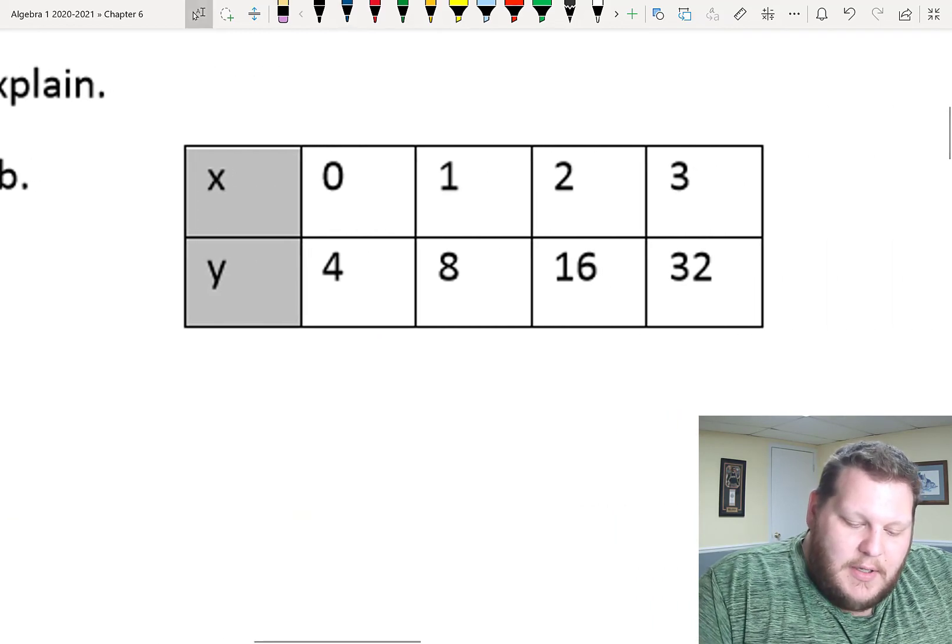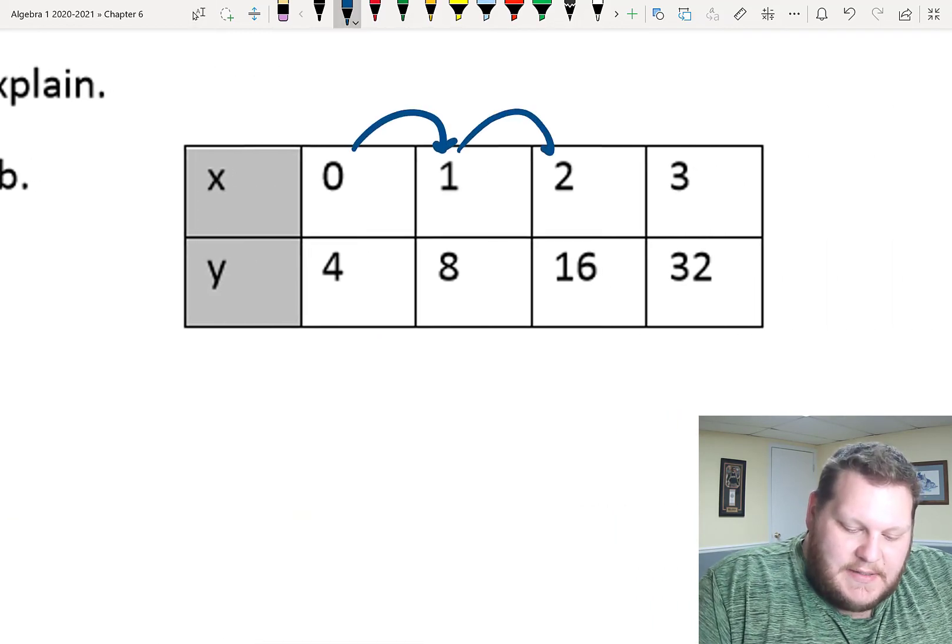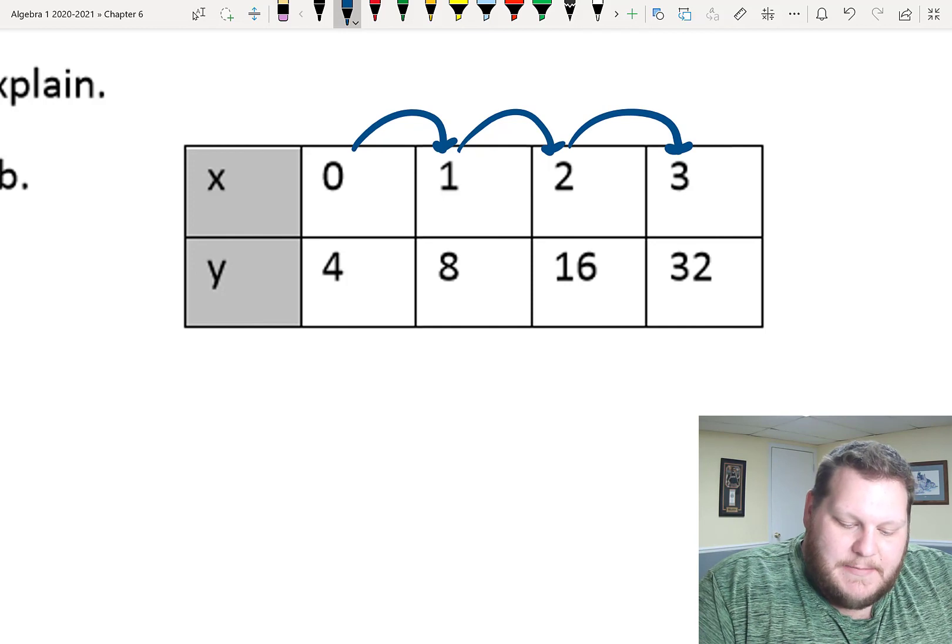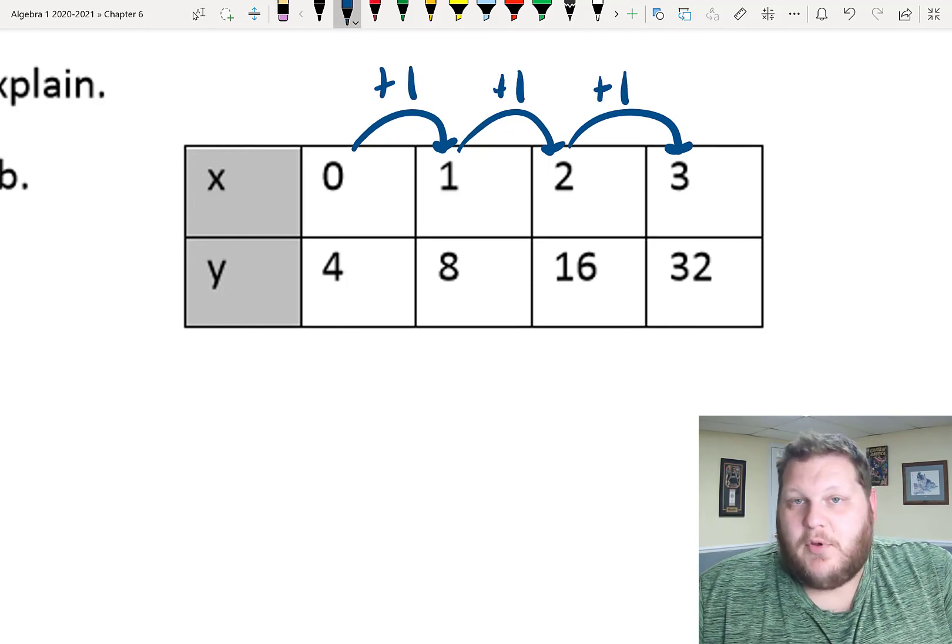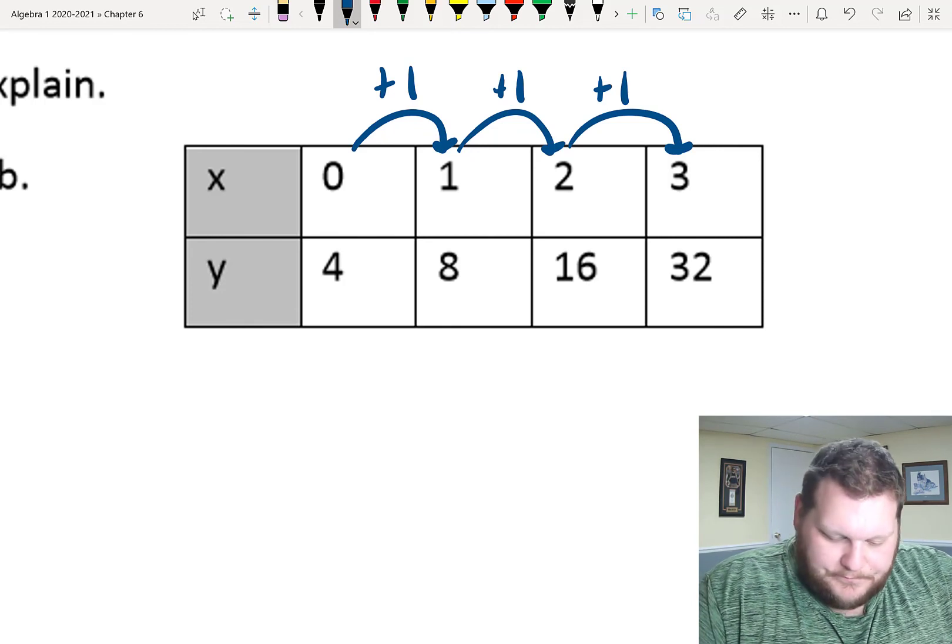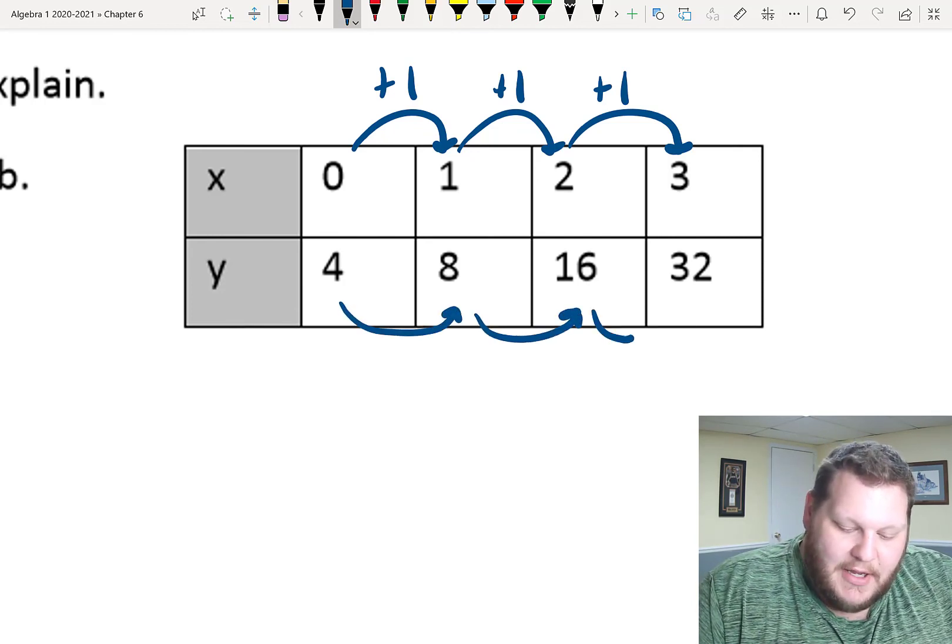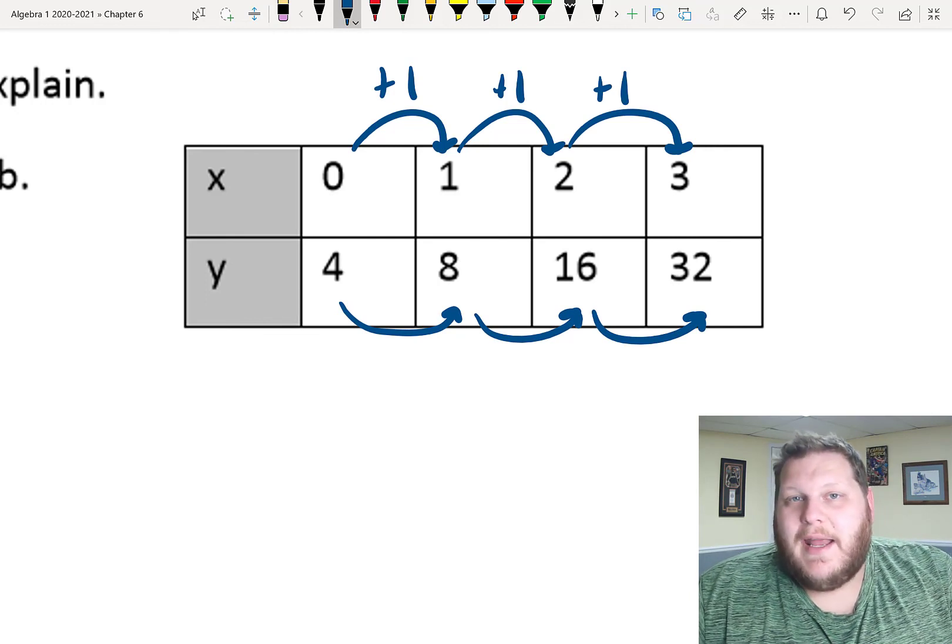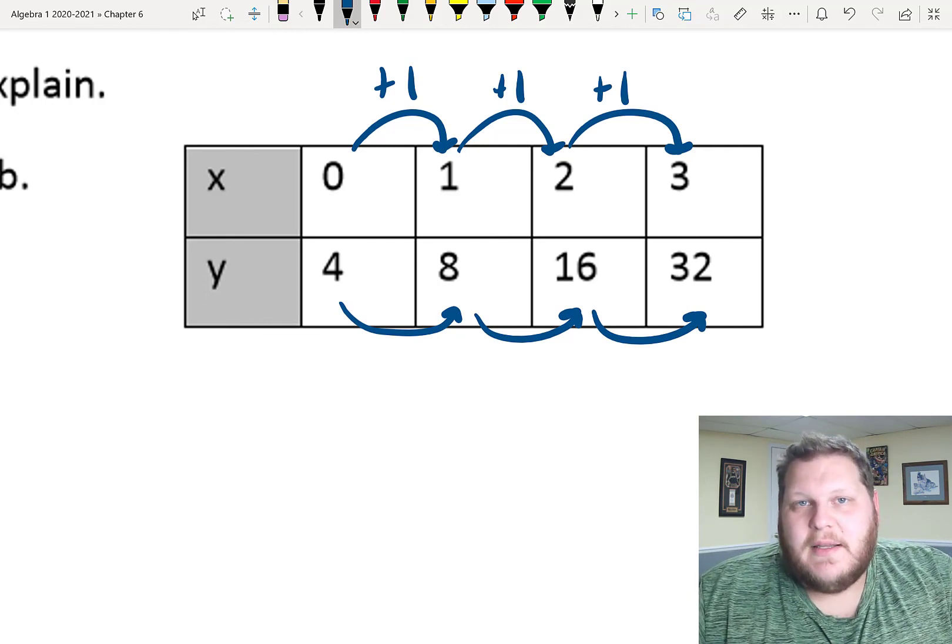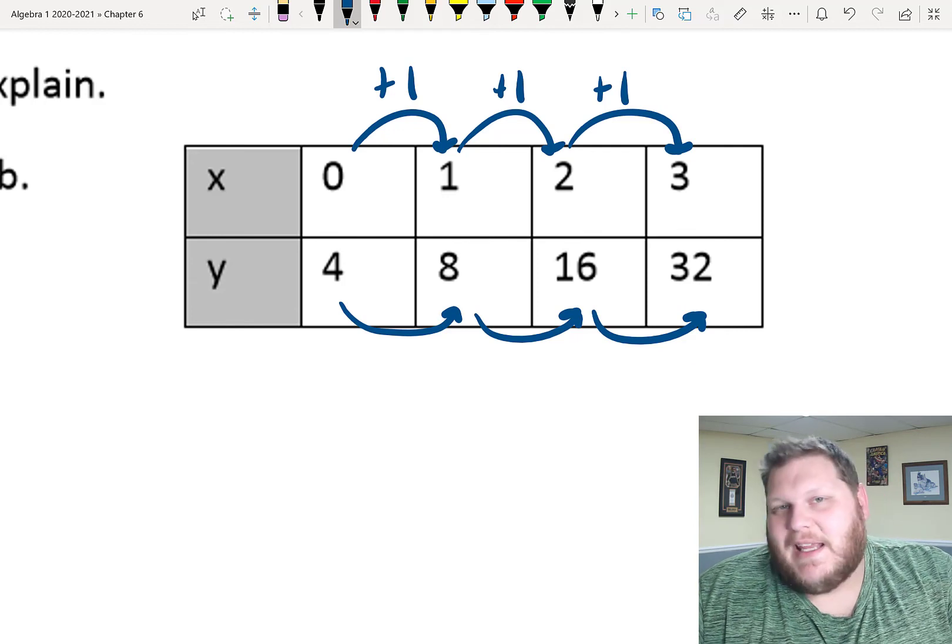Now, with Part B, I still have to check to see if there's even spacing, regardless of whether I think it's exponential or linear. We're still adding one each step of the way in my x values. Going from one to the next in my outputs, however, we can see that addition is not going to work. I can add four to get from four to eight, but if I add four to eight, it's not going to get me to 16.